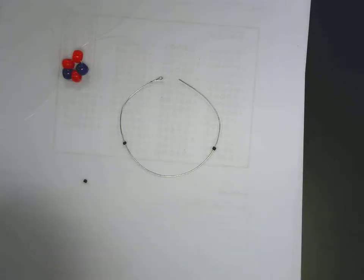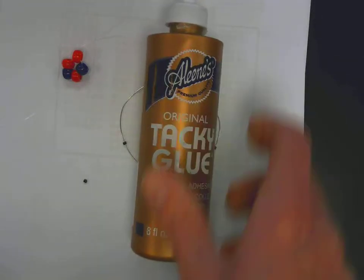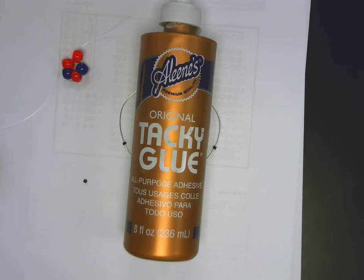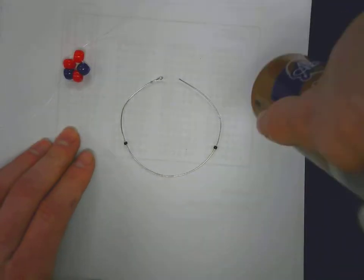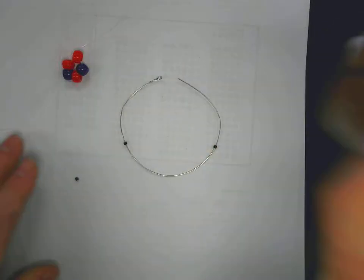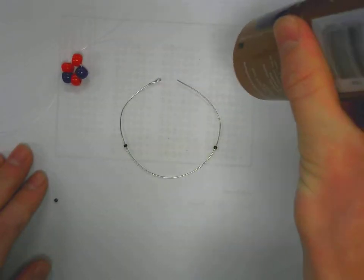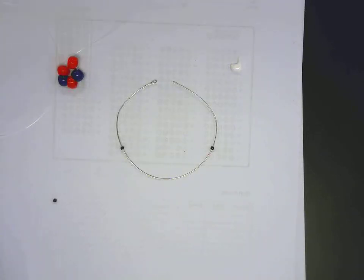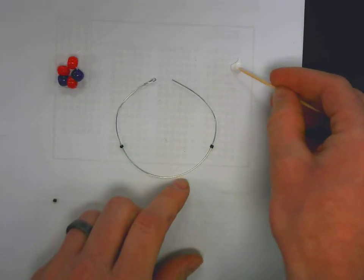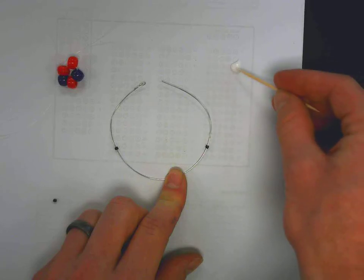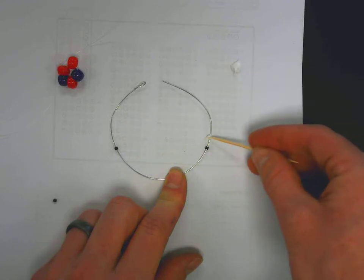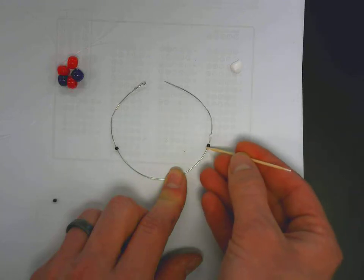Now to get them to stay, use some tacky glue. So you just need a little bit of tacky glue. Use a toothpick. A toothpick you can dab into the glue, and dab the glue onto the wire where you want to put the bead, and then push the bead onto the glue.